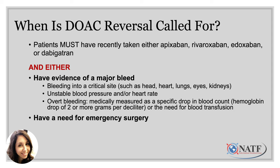For people that do need a reversal agent — patients that present with a major bleeding event to the hospital — it's important to know the criteria for when you would actually be a candidate for reversal. That is generally reserved for patients who are actively taking their DOAC and present with evidence of a major bleed, which would include bleeding into a critical site like your head, heart, lungs, eyes, or kidneys; unstable blood pressure or arrhythmias; overt bleeding leading to a drop in blood counts, such as hemoglobin dropping two or more grams per deciliter, or the need for a blood transfusion. If you need emergency surgery, that would also be an indication to reverse your anticoagulant so we can safely take you to surgery.